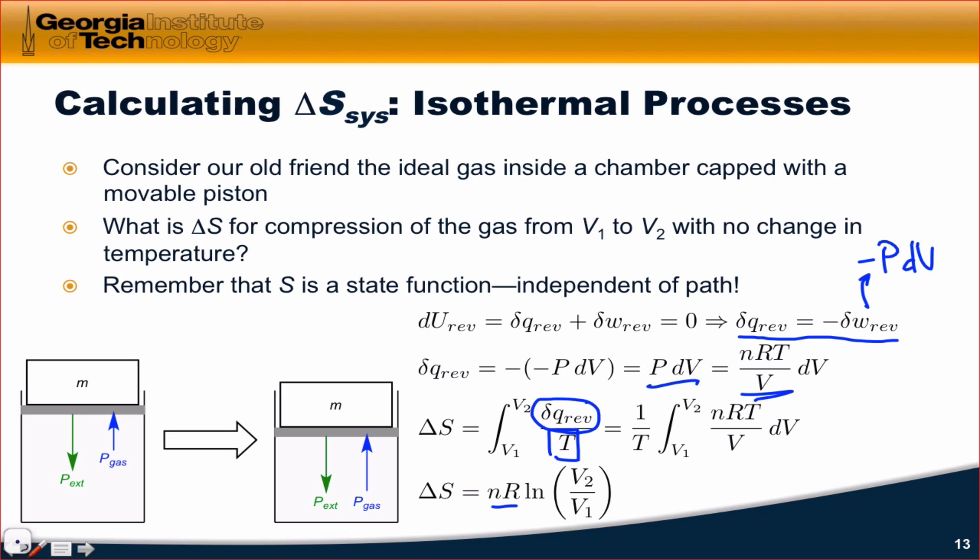And so, ΔS for this process is n times R times the natural log of V₂ over V₁. And for this compression process, V₂ is less than V₁, and so we should expect ΔS to be less than 0, right? That should make sense. We're compressing the system and concentrating the kinetic energy of the ideal gas particles into a smaller volume.